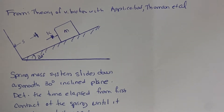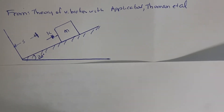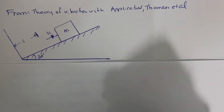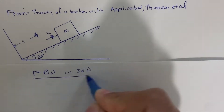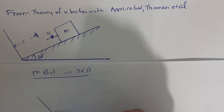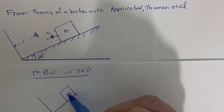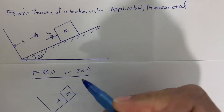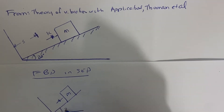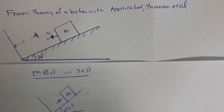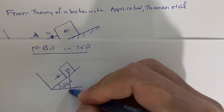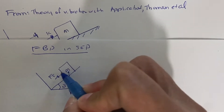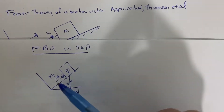I'm going to start working this system by drawing a free-body diagram for the static equilibrium position, which is this initial position. In the free-body diagram at static equilibrium, we have the mass on the spring at 30 degrees, and we can see the forces acting on the mass: the weight and the spring force, which is acting along the incline.